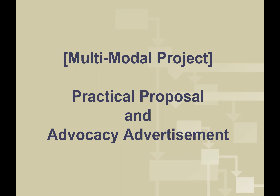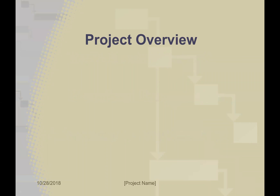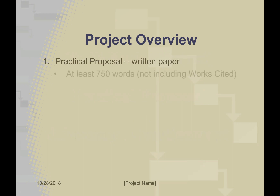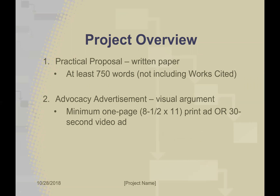Hello, everyone. I'd like to introduce you to this multimodal project, which consists of a practical proposal and an advocacy advertisement. Just an initial overview: the practical proposal is a written paper that will be at least 750 words, not including the works cited page, whereas the advocacy advertisement is a visual argument that will be a minimum of a one-page print ad or a 30-second video ad. Now I'm going to go through each of these in more detail.